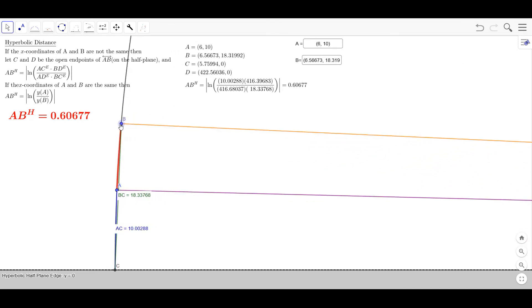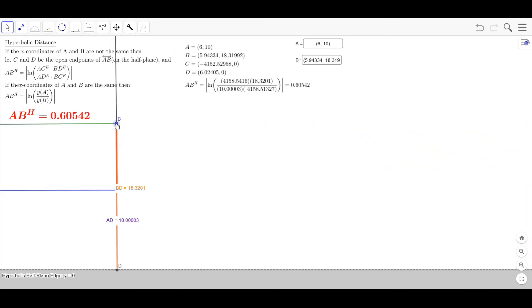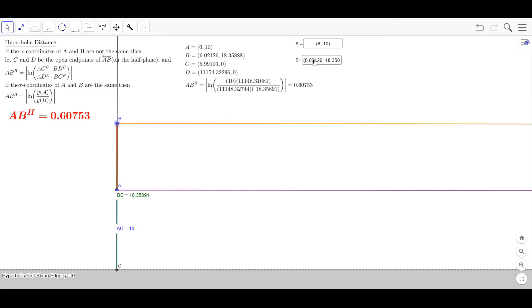If you ever get to the point where B and A are the same, and I can make them the same by just typing in this box up here. Let's make them both exactly six.